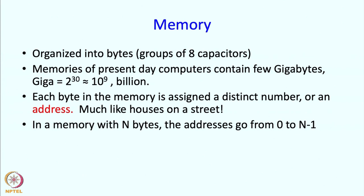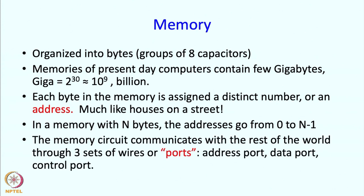You can say do something to byte number 57, and those capacitors may get something written into them, or you may ask what is in those capacitors. The memory circuit communicates with the rest of the world using 3 sets of wires or ports: the address port, data port, and the control port. The control port could be a single wire or multiple wires. I am going to talk about what happens if it is a single wire, though these details are just used to make the picture more detailed and real.